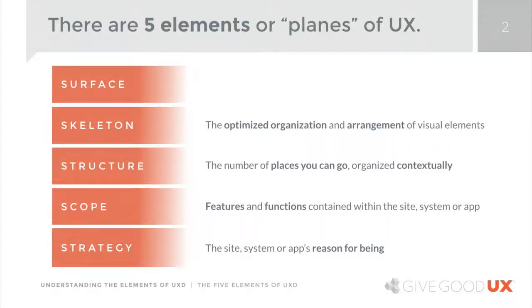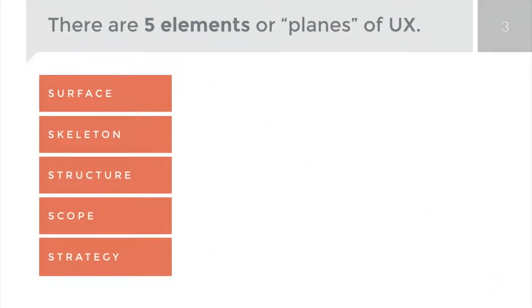Finally, we get to the surface, which is essentially the part that the user sees. Now we have visible pages, visible websites, visible application screens — images, text, things we can click on, interaction and animation. It's all the point of contact; the surface is really about the visual contact that the person has with the product. So the five planes build upon each other from a strategic point — thinking about what we're doing, why we're doing it, who we're doing it for — all the way up to the surface plane, where we have something the user can actually see and interact with.